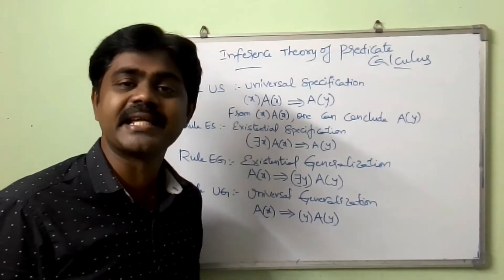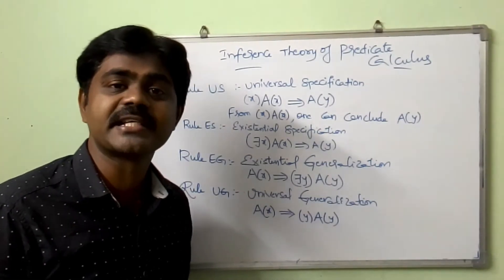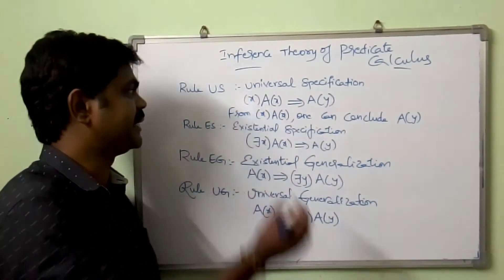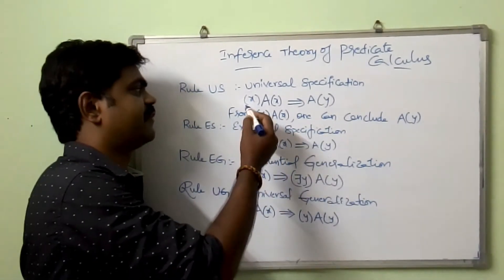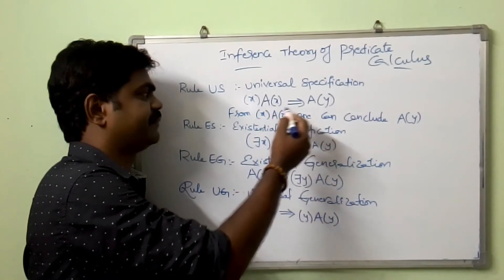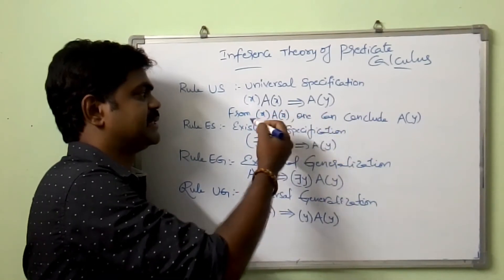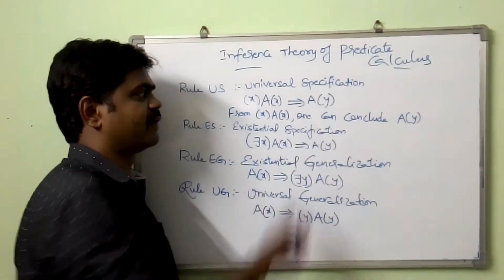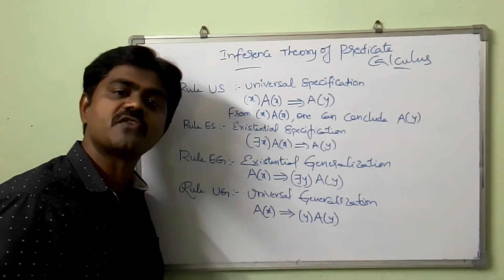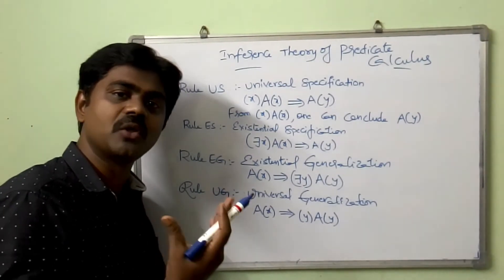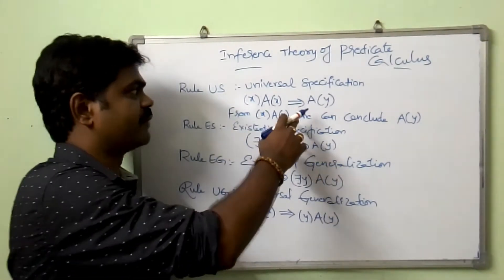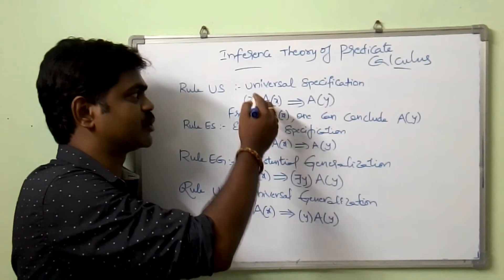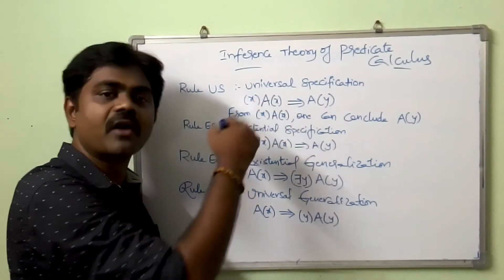So US is nothing but universal specification. So the formula is: for all x, A(x), one can conclude A(S). This is called universal specification. So universal means for all.